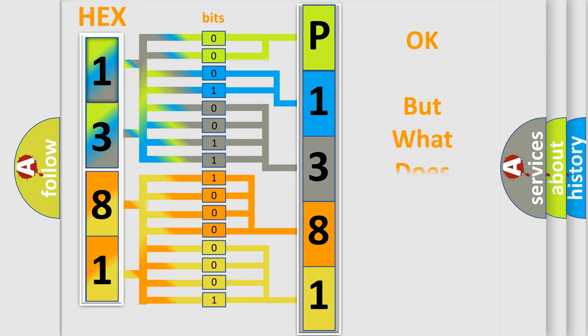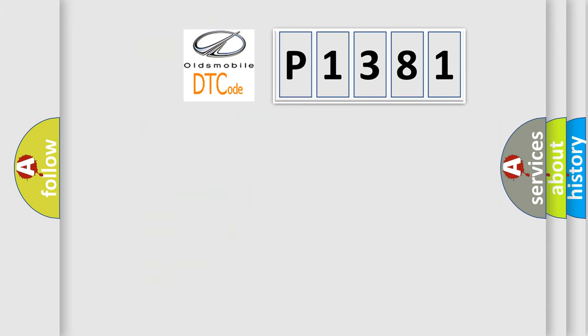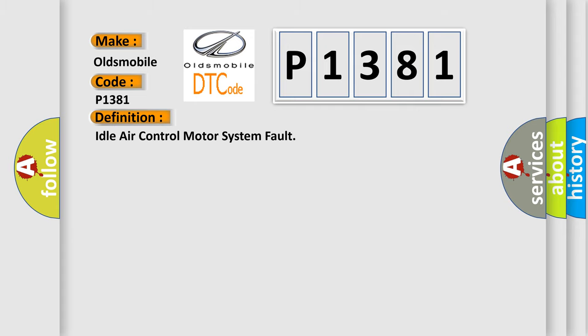We now know in what way the diagnostic tool translates the received information into a more comprehensible format. The number itself does not make sense to us if we cannot assign information about what it actually expresses. So, what does the diagnostic trouble code P1381 interpret specifically for Oldsmobile car manufacturers? The basic definition is: Idle Air Control motor system fault. Here is a short description of this DTC code.